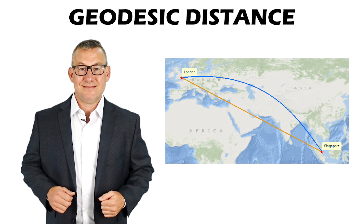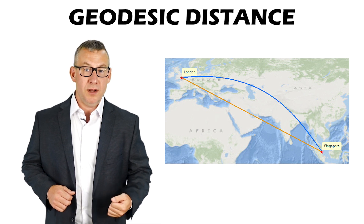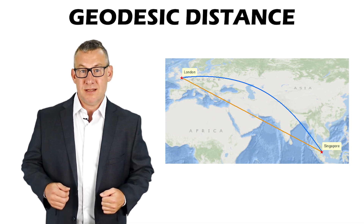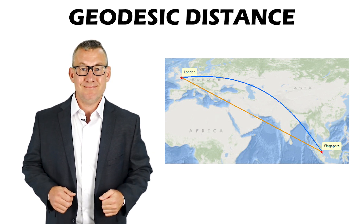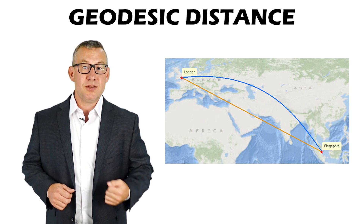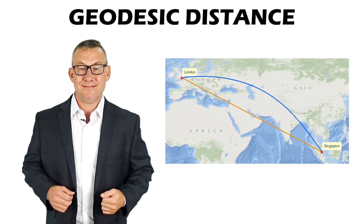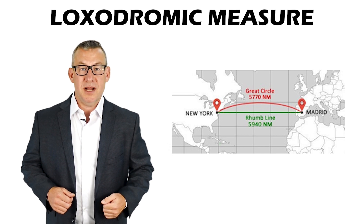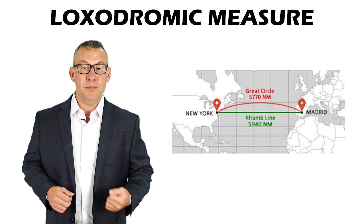Geodesic distance is the shortest distance between two points across a curved surface like the Earth. It is used on unprojected maps or over very large distances that span hundreds of miles. Geodesic distance is similar to, but not the same as, great circle distance, as the arc does not have to belong to a circumference passing through the center of a sphere. Geodesic distance is a line of constant bearing or azimuth.